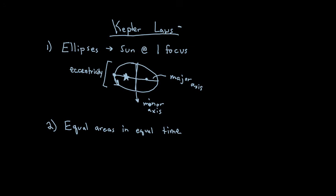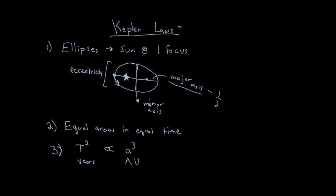There are good animations online that clearly show Kepler's second law. Kepler's third law tells us that the orbital period squared — how long a planet takes to orbit its star, in years — is proportional to a cubed, where a is the semi-major axis in astronomical units. The semi-major axis is half of the major axis. Those are Kepler's three laws, covering everything about gravity and orbits.